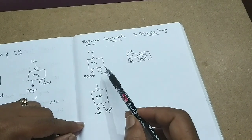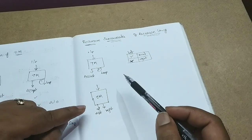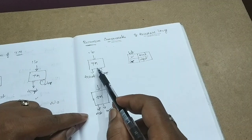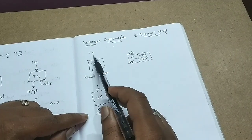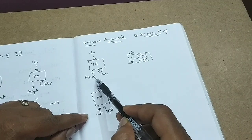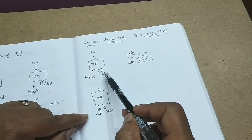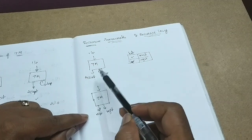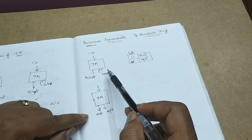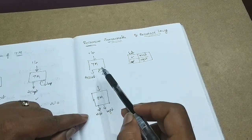Turing machines are of two types based on the problem. One type is: if you give an input to it, it will accept and halt — it will accept and reach a final state. Rejection goes to an infinity loop. That is the halting problem.